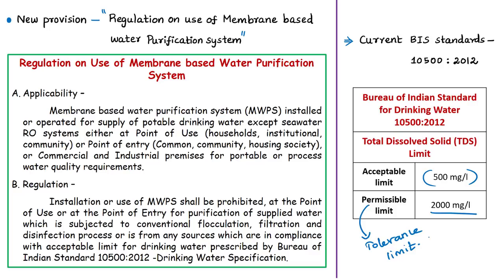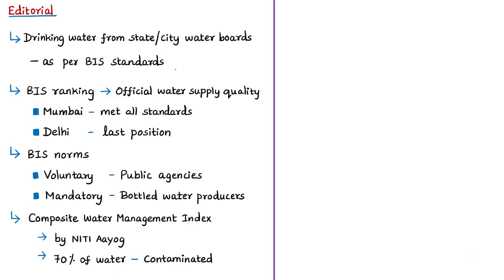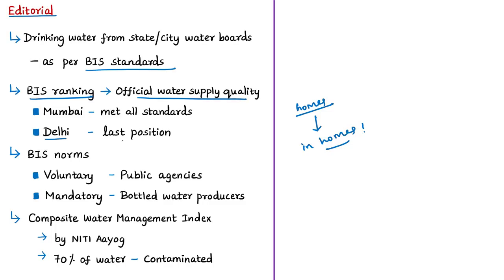According to the editorial, drinking water from several state and city water boards meets BIS standards, but water at homes — such as bore water — often does not. In such situations, restricting users from using RO processes is not advisable. The author also notes a BIS city ranking from last year where Delhi ranked last and only Mumbai met all standards. Critically, BIS norms are voluntary for public agencies supplying piped water but mandatory for bottled water producers.